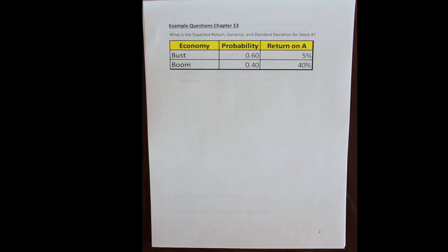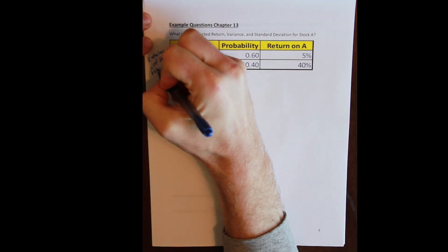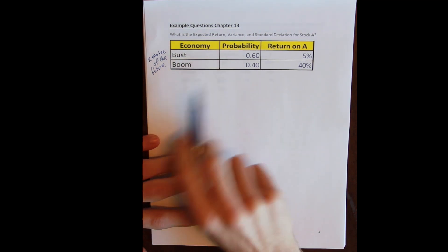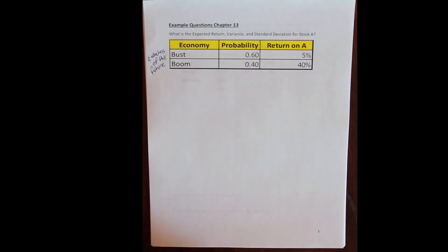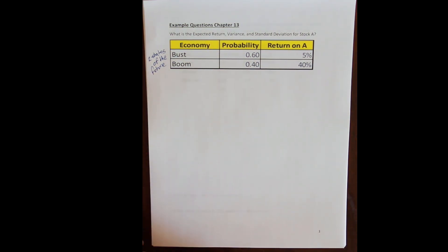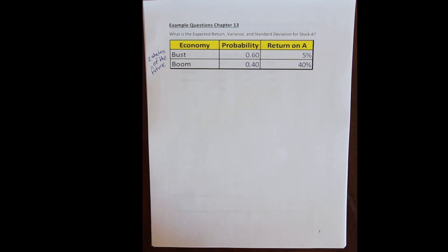Let's start with a quick example. We have a very simple asset in a very simple world where there are just two states of the future. The first state is the bust state — things are going to go badly. The second state is the boom state — things are going to go well. The probability of the bust occurring is 60% and the probability of the boom is 40%. Stock A has a 5% return in the bust state and a 40% return in the boom state.